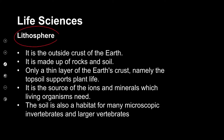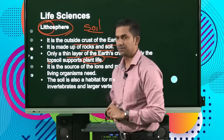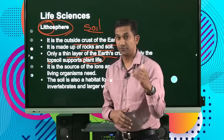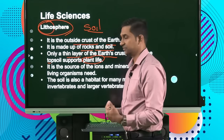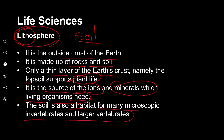We then go on to the third component, which is called the lithosphere. Litho refers to the soil — this is the outer crust of the earth, made up of rock and soil. Only a thin layer of the earth's crust, namely the topsoil, supports plant life. Below that, we have different layers of rock and sand that make up the inner crust of the earth. This is a source of ions — the soil — and minerals, which living organisms need. The soil is also a habitat for many microscopic invertebrates and larger vertebrates.